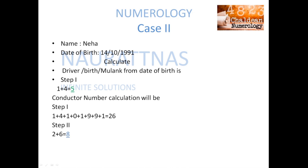The calculation is 1 plus 4 plus 1 plus 0 plus 1 plus 9 plus 9 plus 1, which comes to 26. Then we add 2 plus 6, that is 8. We keep adding until it comes to a single digit. So the conductor number is 8.